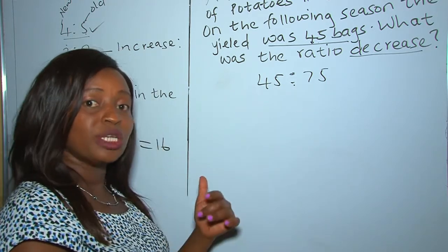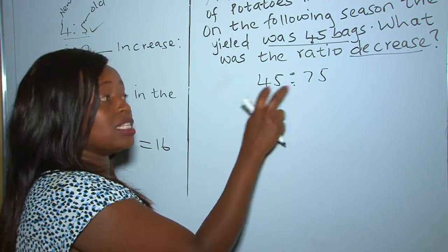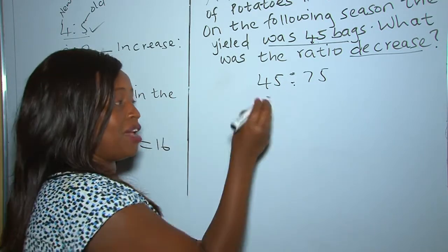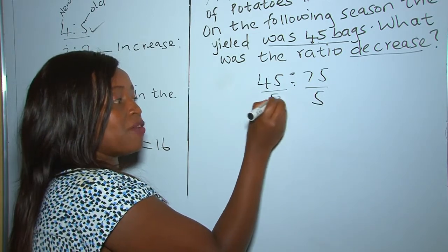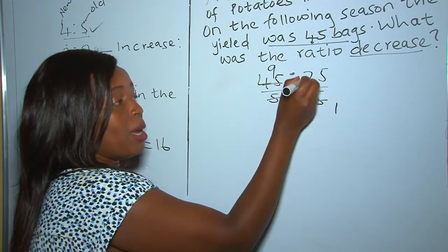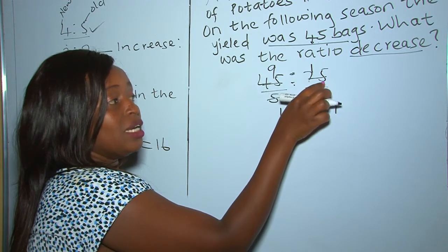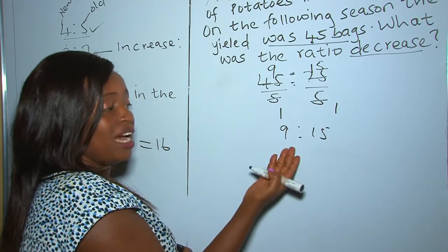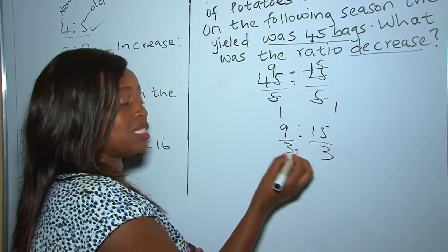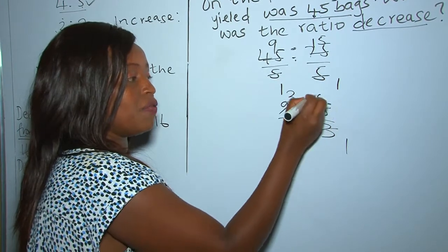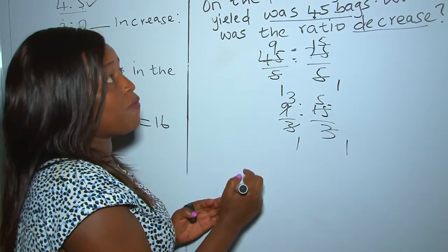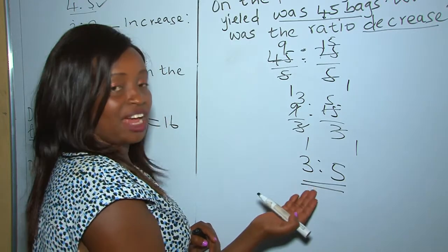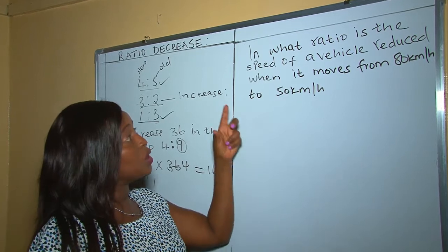So the ratio is 45 is to 75. Remember from a previous lesson how to simplify ratios — these numbers have a common divisor. They both end in 5, so we can divide by 5: 45 ÷ 5 = 9 and 75 ÷ 5 = 15. That gives 9 is to 15. They still share a common divisor of 3, so divide by 3: 9 ÷ 3 = 3 and 15 ÷ 3 = 5. Therefore the ratio decrease is 3 is to 5.